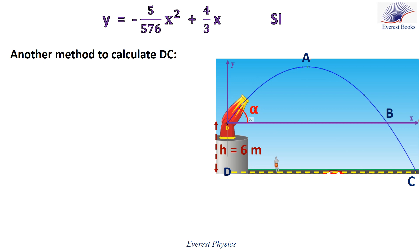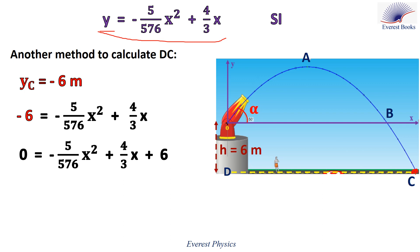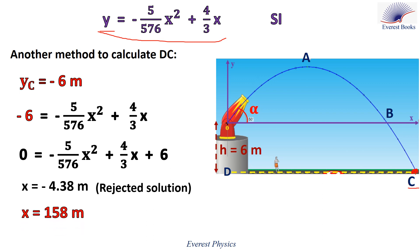Here is another method to determine the distance DC using the equation of the trajectory. At point C, y equals minus 6 meters, so replacing y by minus 6 and rearranging gives an equation with two solutions. The first value x equals minus 4.38 meters is rejected because the abscissa of C is positive. The other solution, x equals 158 meters, so DC equals 158 meters.